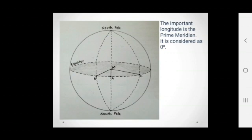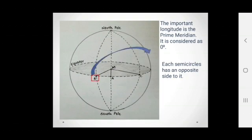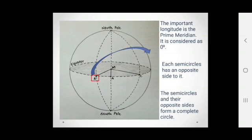Just like the parallels of latitude, the angular distance of longitudes from the prime meridian are measured in degrees. Each of the semicircles has an opposite side to it. For example, ellipse B has an opposite side to it. Now the semicircles and their opposite sides form a complete circle.